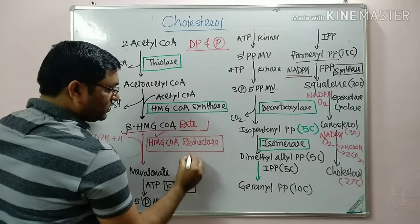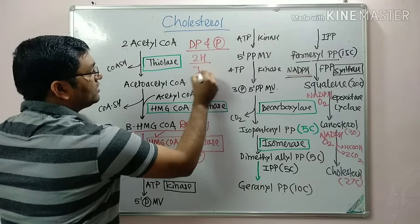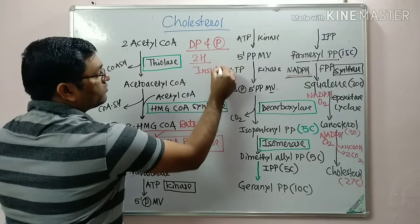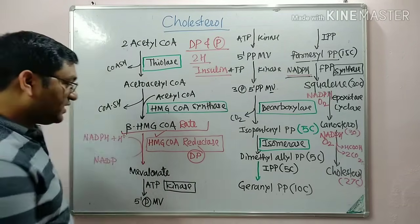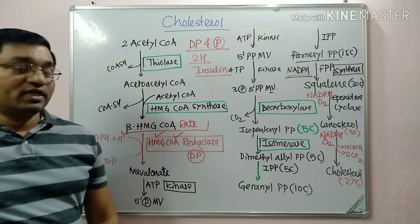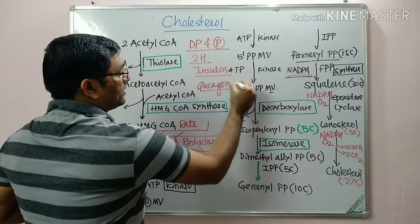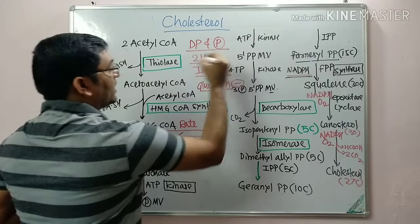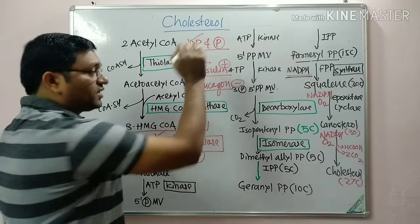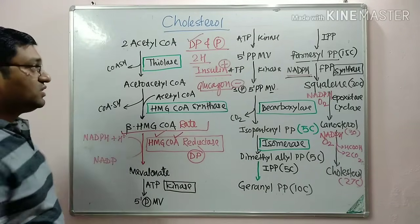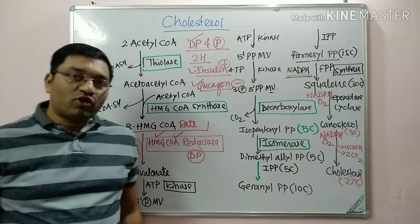HMG-CoA reductase is active in the dephosphorylated state and inactive in the phosphorylated state. Insulin and thyroxine maintain the dephosphorylated state and activate HMG-CoA reductase, while glucagon inhibits HMG-CoA reductase. This regulation by hormones represents covalent modification of the enzyme.